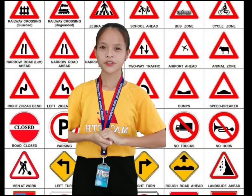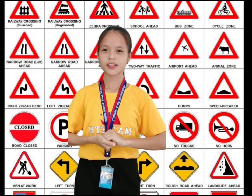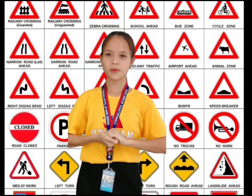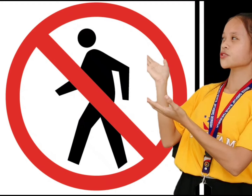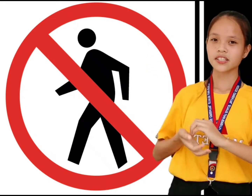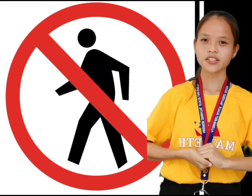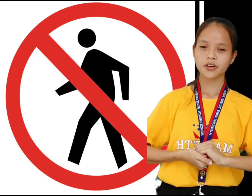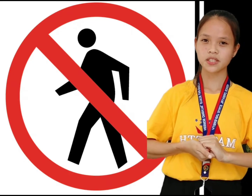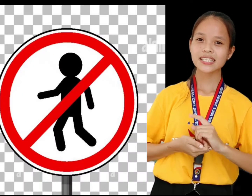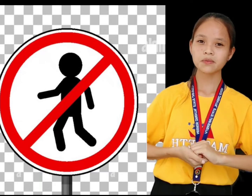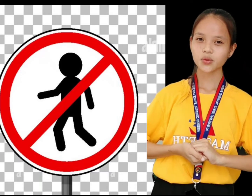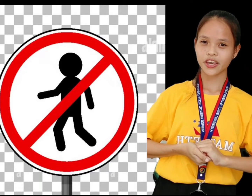A no pedestrian crossing sign is a regulatory sign. It tells pedestrians not to do something. No pedestrian crossing signs are posted around areas where there is a need to stop or prevent pedestrians from crossing a specific street. This sign forbids pedestrians to cross the street in the area. That would be all. Thank you.